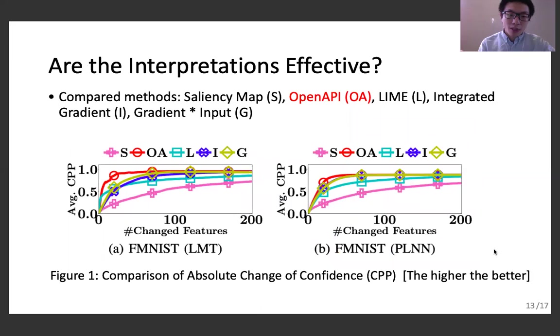In our second experiment, we quantitatively evaluate the effectiveness of interpretations. Since a good interpretation model should identify features that are relevant to the predictions, we expect modifications on those relevant features will lead to strong changes on the predictions. We compute interpretations by five different methods and iteratively flip the input features based on the interpretations. The figures show how much the prediction probability changes. As it shows, our proposed method outperforms the other methods most of the time, because our method computes the decision features that are exactly used by the target models.